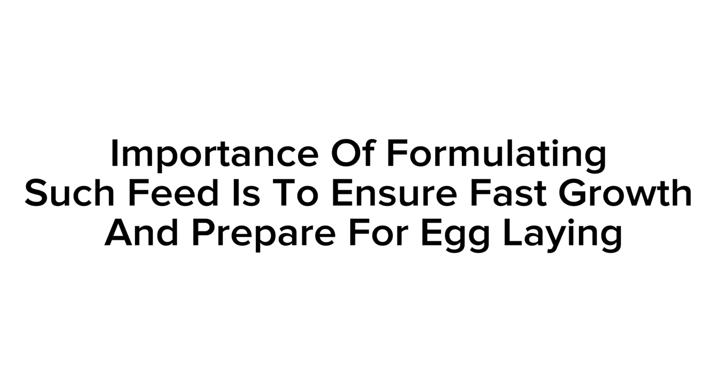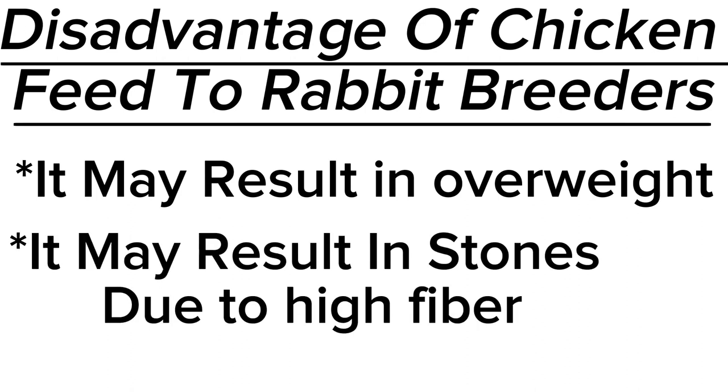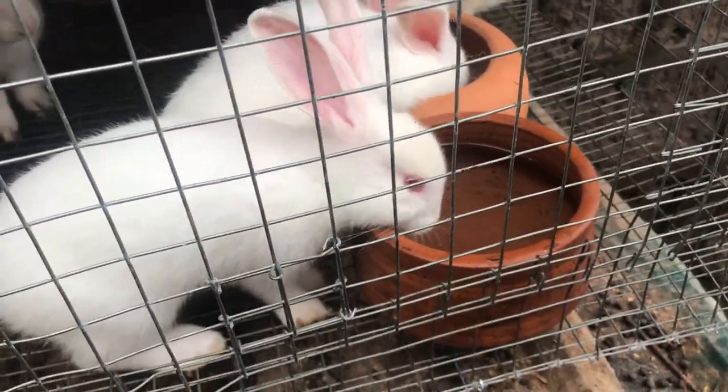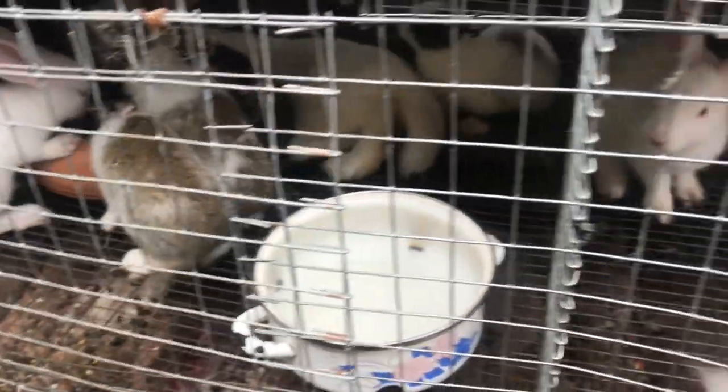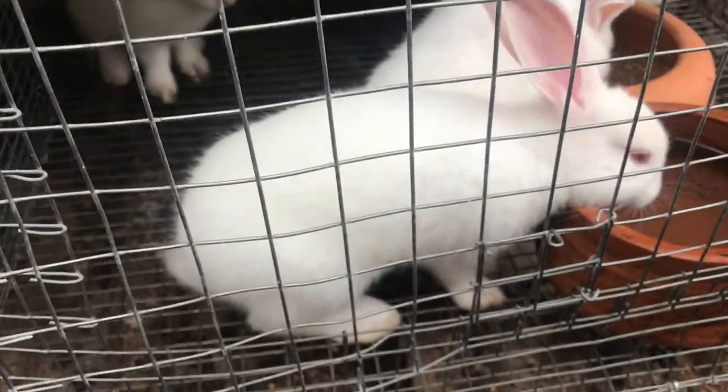An important purpose in formulating this feed for chickens is to ensure fast growth and to produce for egg layers. Now, if you observe, this formulation can be related to rabbit feed, meaning we can analyze these two feeds together to make a good compound feed for rabbits. However, chicken and rabbit are two completely different species, and chicken feed — especially broiler starter or finisher with up to 24% crude protein — should not be fed to breeding rabbits, as it can cause dangerous weight gain and health issues.